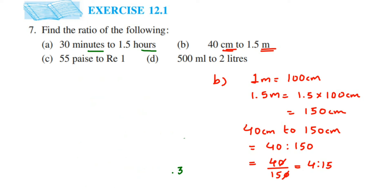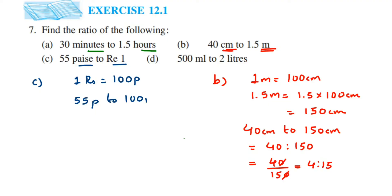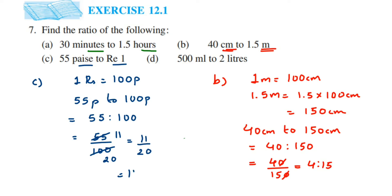Now let's go to the third one. We have 55 paise to 1 rupee. Paise and rupee are different units, so we are going to convert rupees into paise. We know that 1 rupee is equal to 100 paise. So instead of 1 rupee, I will write down 100 paise. Writing in ratio form, this becomes 55 is to 100. Converting to a fraction: 55 by 100. Cancel in the 5 times table — 5 elevens are 55, 5 twenties are 100 — so we get 11 by 20. The ratio will become 11 is to 20.